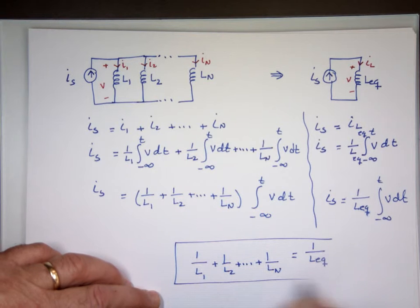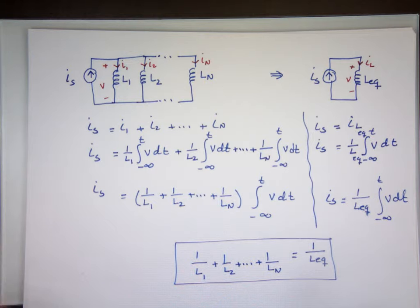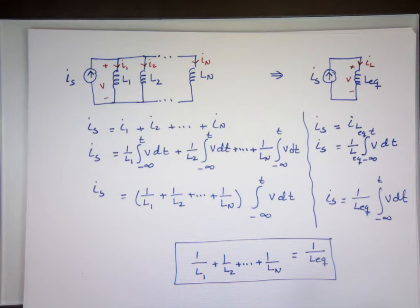So when they're in parallel, just like resistors, we find the equivalent using this equation. When they're in series, we do the same thing just like resistors — we find the equivalent by adding them. So only when there's a change in current will there be a voltage across an inductor? Correct. V equals L·di/dt. If there's no change in current, the derivative is zero and the voltage is zero.